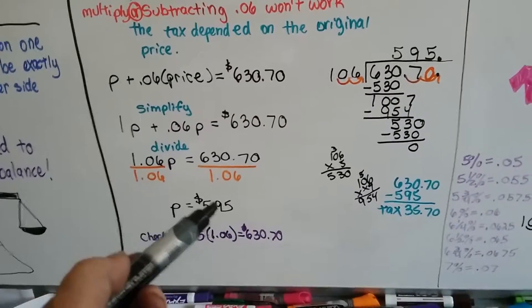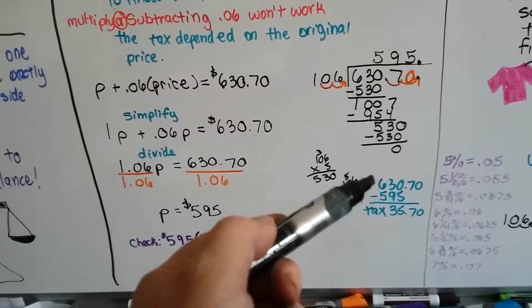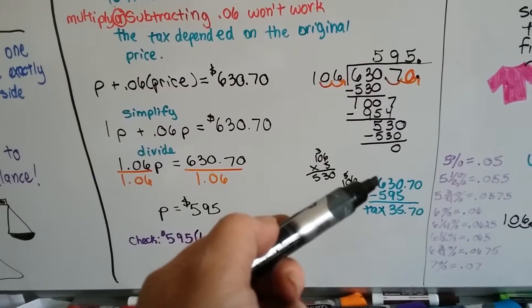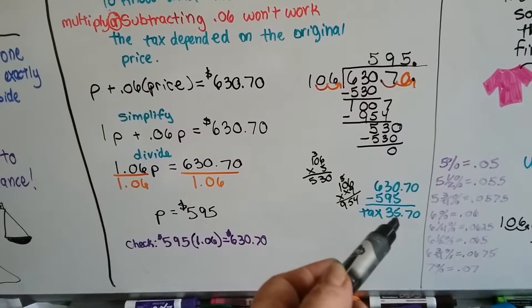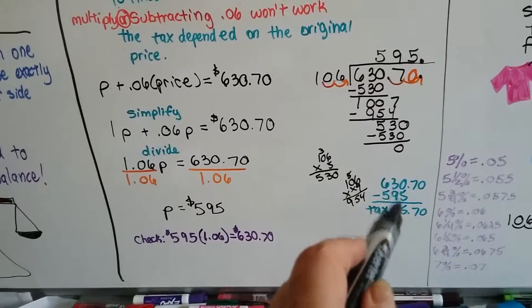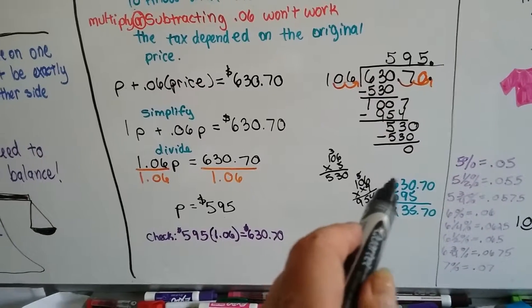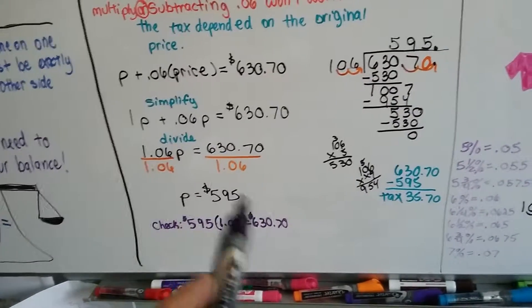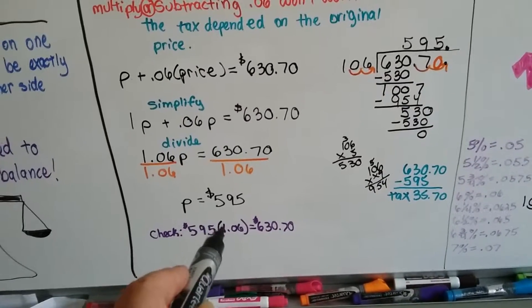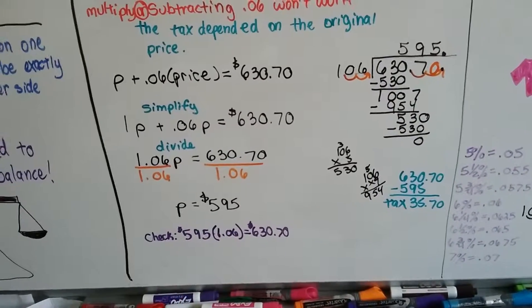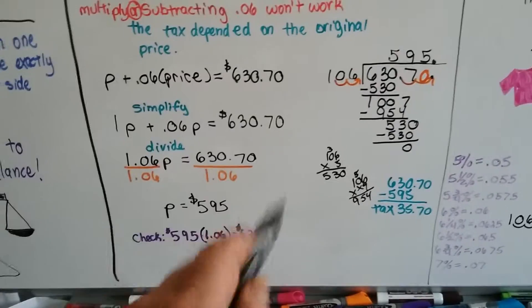Now if I wanted to know the price of the sales tax, I could just subtract the $595 from the final price of $630.70. I know she paid $35.70 in tax. I could add these together and if it comes back to the $630.70, I know I did it right. Or I could multiply the $595 times 1.06 and I could get the $630.70 to know I did it right.